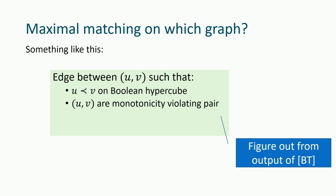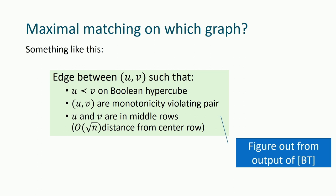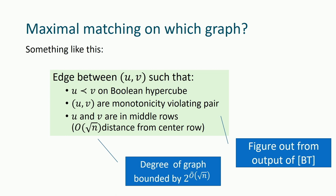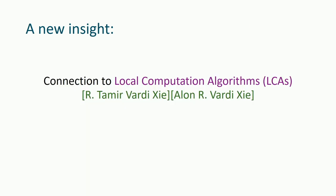To determine if u and v are a monotonicity-violating pair, we query Bshouty-Tamon's output on u and v. Once Bshouty-Tamon is written down, we can query it at any point. The degree of the full transitive closure graph would be huge, but by focusing on the middle layers, we keep the degree at 2^{O-tilde(sqrt(n))}.